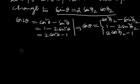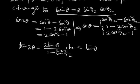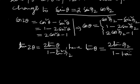Again, as tan 2θ equals 2 tan θ by 1 minus tan²θ, replacing θ with θ/2 gives tan θ equals 2 tan(θ/2) by 1 minus tan²(θ/2).